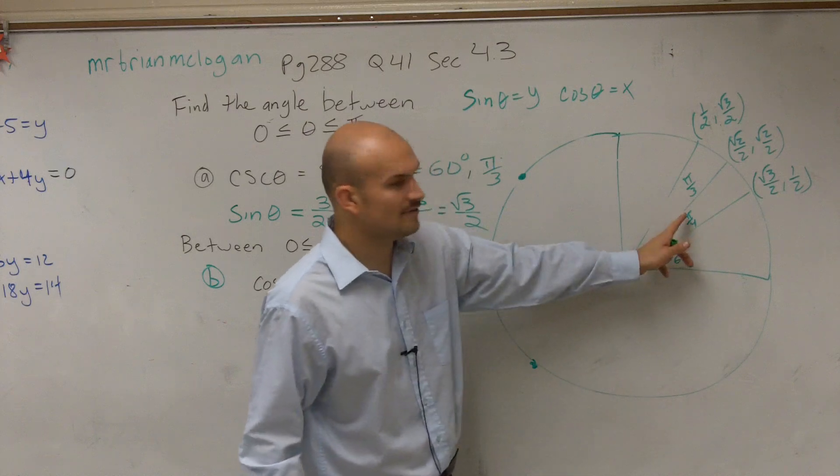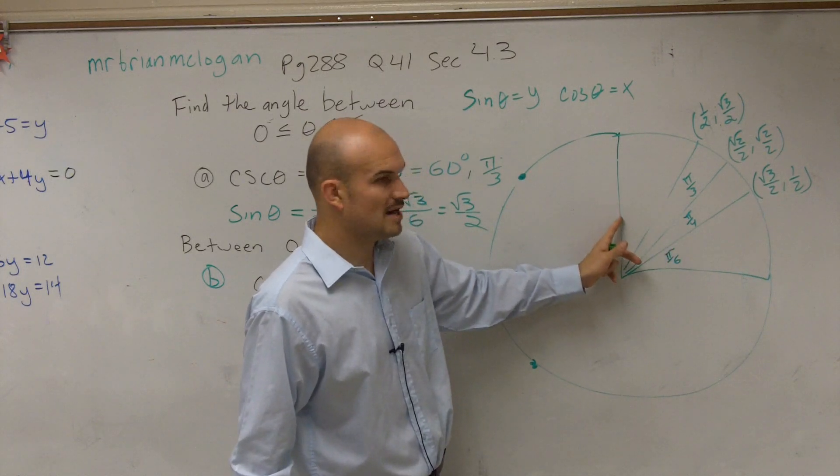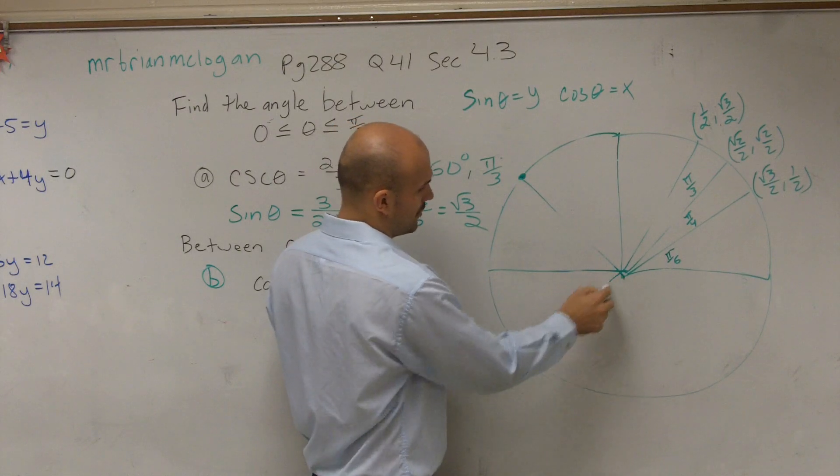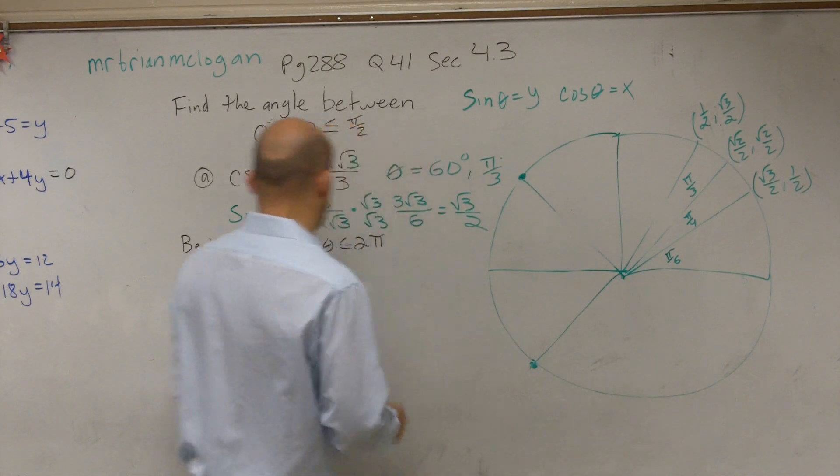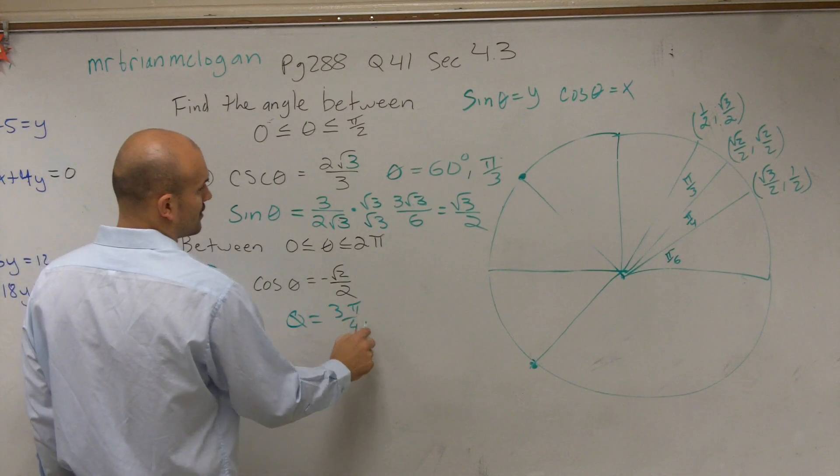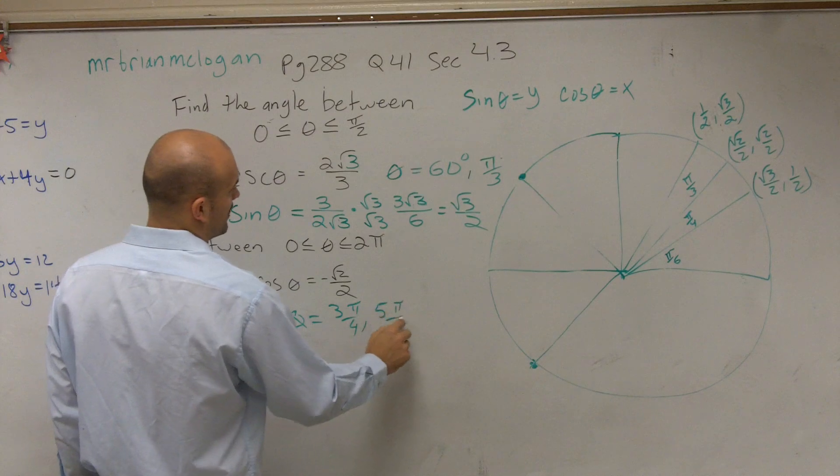So that means it's going to be here and down there. So if here's π/4, what would this point be? π/4, 2π/4, 3π/4, 4π/4, 5π/4. So the angles for here is θ equals 3π/4 and 5π/4.